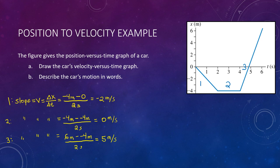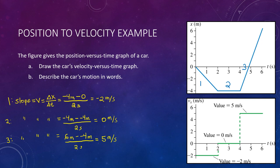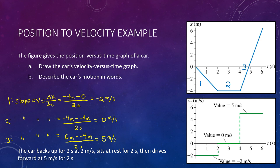Our graph shows −2 m/s for the first two seconds, 0 m/s for the next two seconds, and +5 m/s for the final two seconds. Part B asks to describe the motion in words: the car backs up for two seconds at two meters per second, sits at rest for two additional seconds, and then drives forward at five meters per second for two more seconds. This illustrates three ways to describe the same thing: mathematically, visually with a graph, and with words.